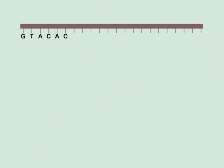A single strand of DNA can alphabetically be sequenced by the letters A, C, T and G.